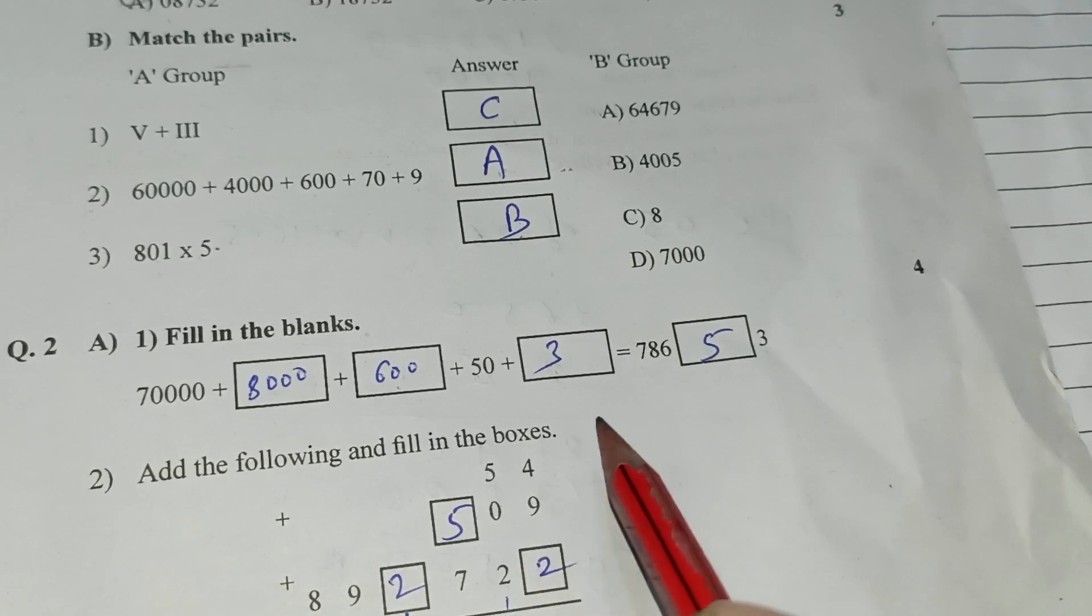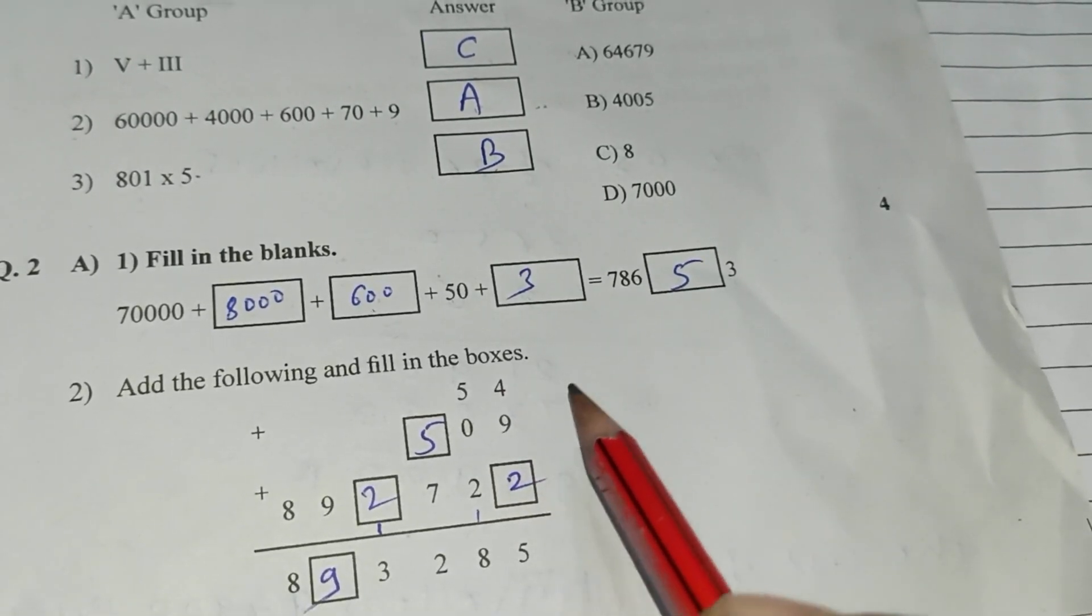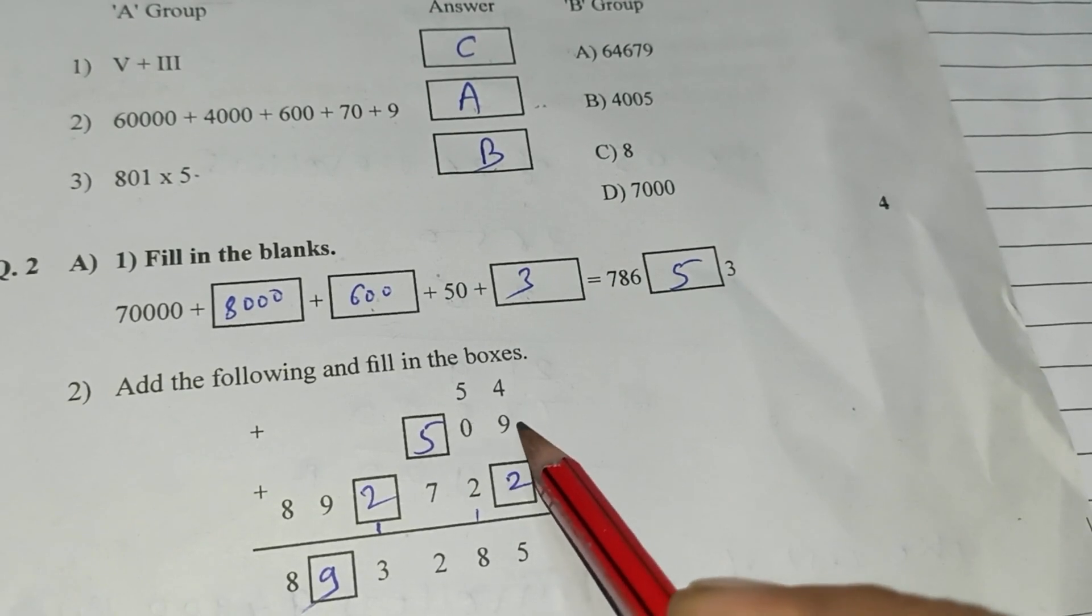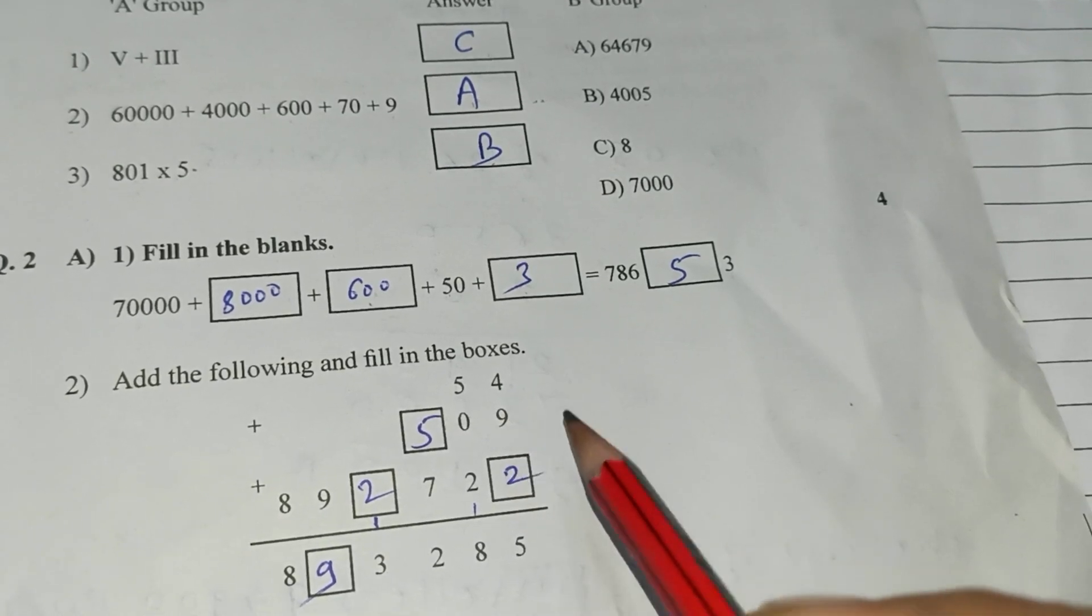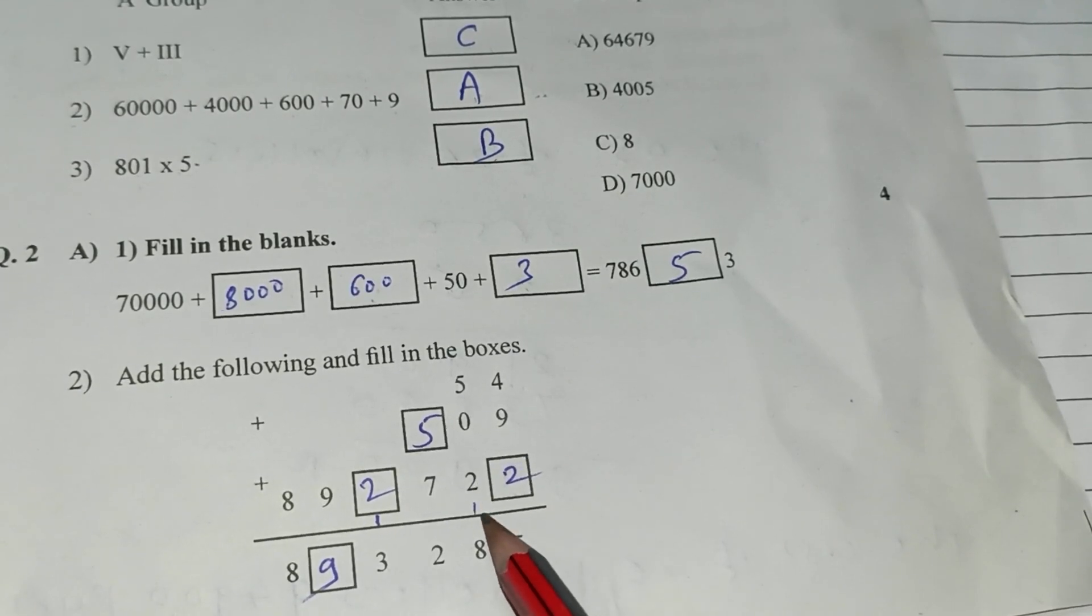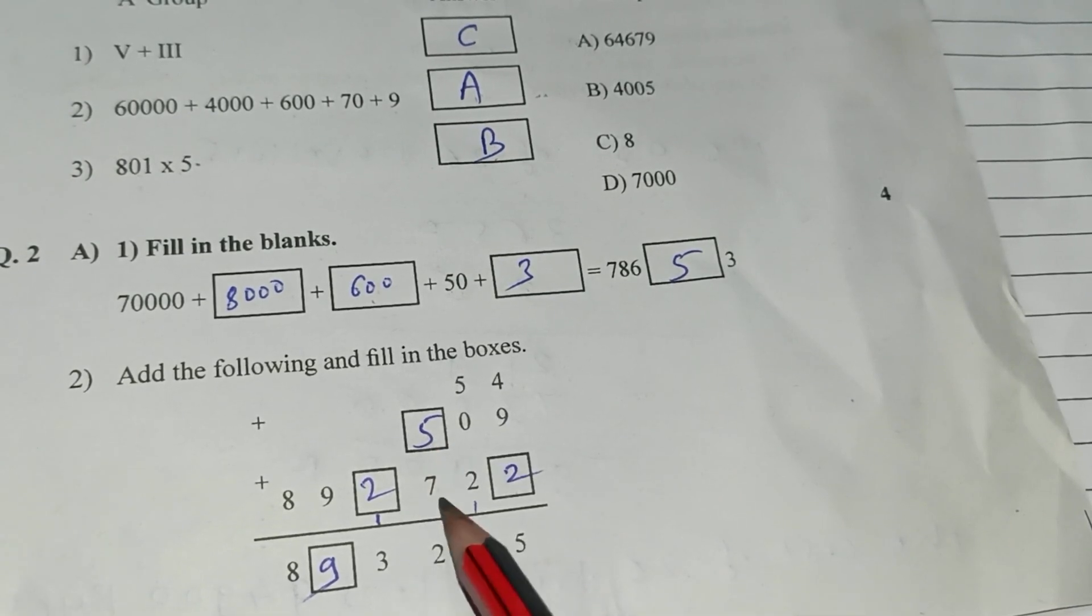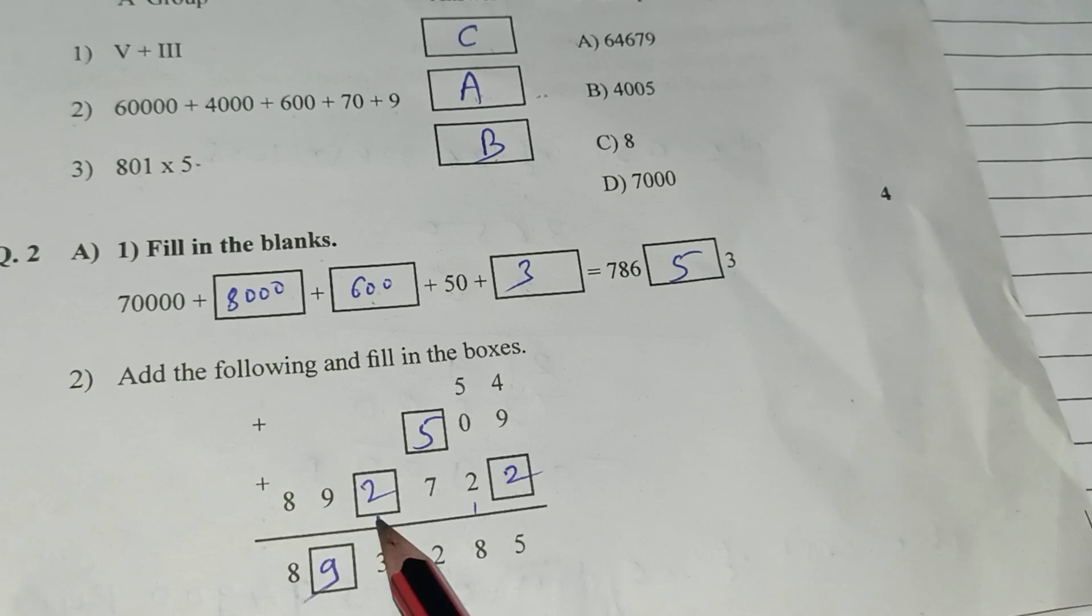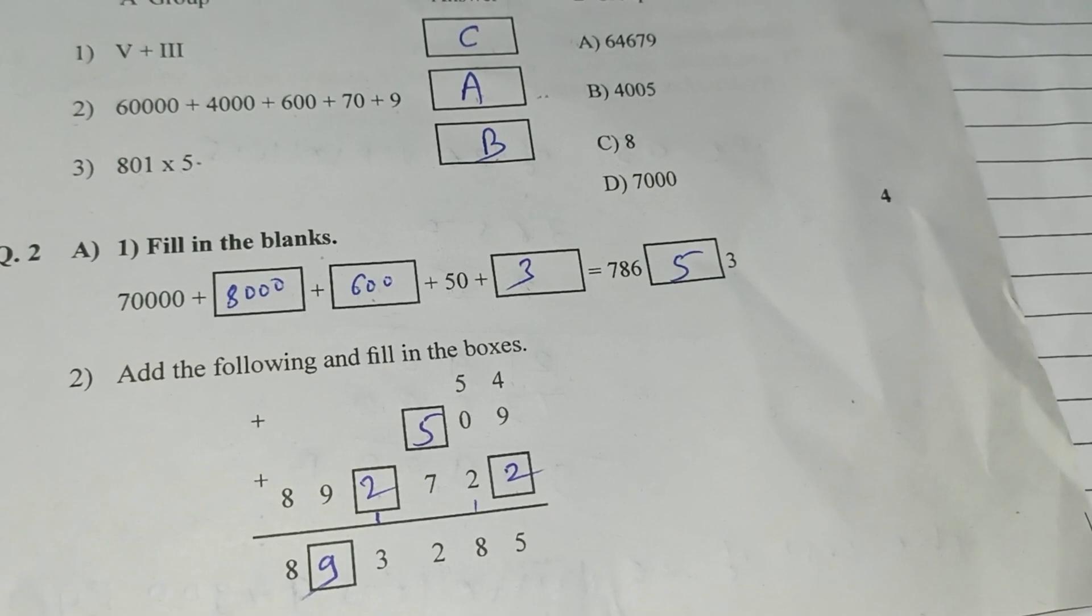Add the following and fill in the boxes. 4, here 9 plus 4, 13, 13 plus 2, 15, here 2. Reminder 1, 2 plus 1, 3 plus 5, 8. 7, 7 plus 5, 12, here 5. Here reminder 1, 1 plus 2, 3, here 2. 9 as it is, 8 as it is. 8,93,285.